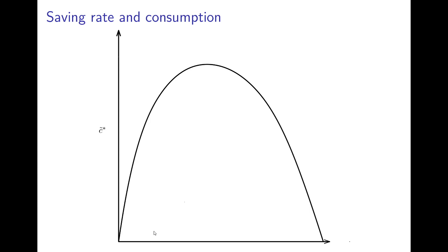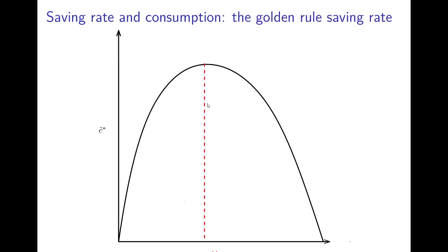This saving rate is often referred to as the golden rule saving rate, illustrated here. We have consumption per unit of effective labor on the vertical axis and the saving rate on the horizontal axis. For a saving rate of zero nothing can be consumed, and for a saving rate of one everything is saved so nothing is consumed. Somewhere between zero and one, due to the concavity of the production function and the linearity of the capital depreciation and dilution line, there is an interior maximum. We denote this as s_gold - the golden rule saving rate that maximizes consumption per unit of effective labor in the long run.